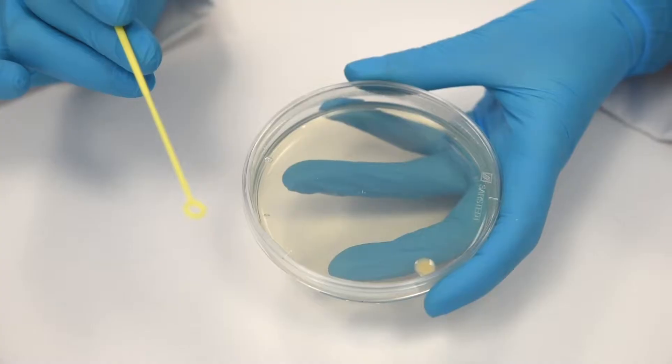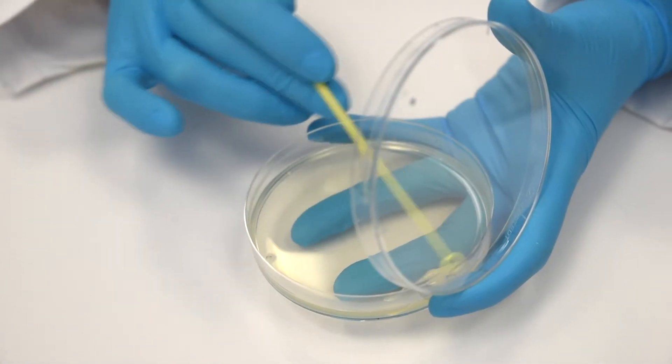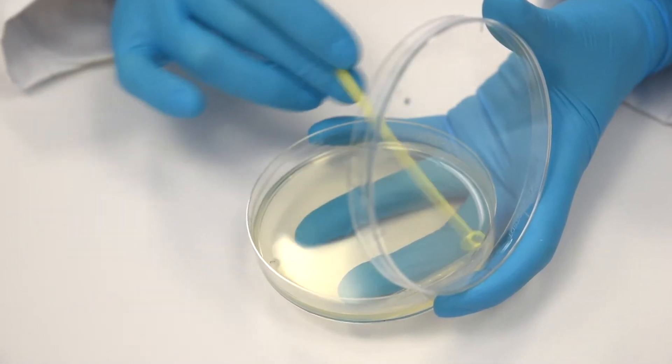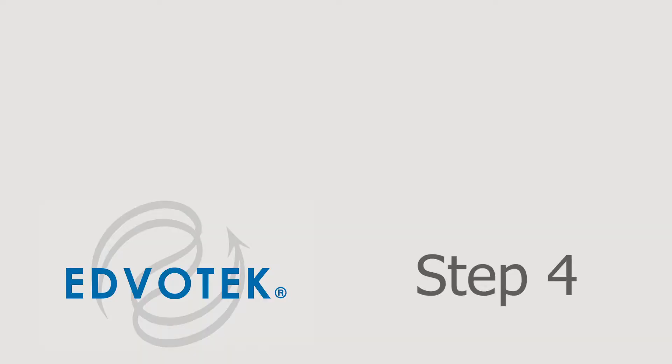Step 3: Streak the loop back and forth through the dissolved Bacto bead to make a primary streak at the top of the plate. Take care not to gouge the loop into the medium.